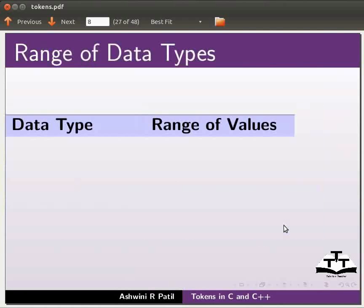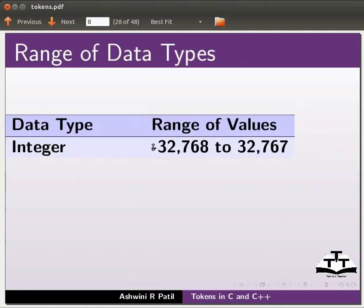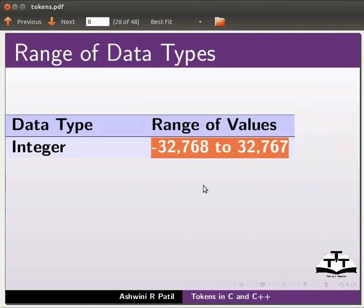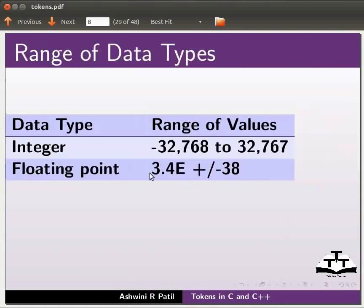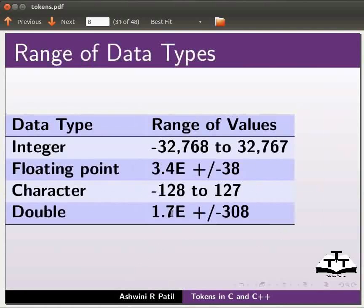Now we will see the range of data types. Integer data type has a range of this. Floating point has a range of this. Character has a range of this. And double has a range of this. The value stored in the variable must not be greater or less than this range.